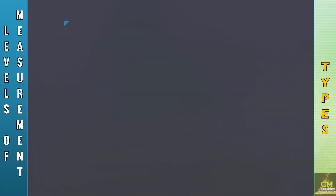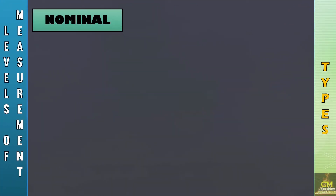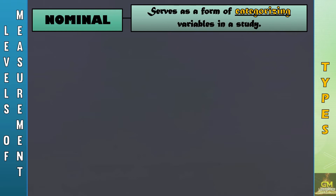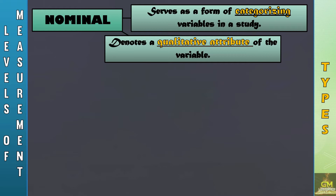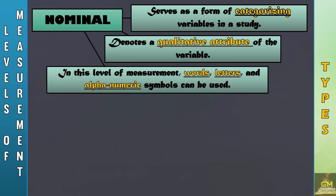At this point, let's focus on the nominal level of measurement. The nominal level of measurement serves as a form of categorizing variables in a study. It denotes a qualitative attribute of the variable. Also, in this level of measurement, words, letters, and alphanumeric symbols can be used.